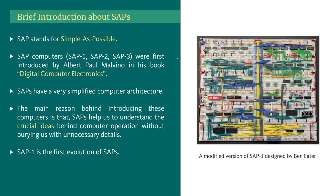Before we begin, we need a brief introduction about the SAPs. SAP basically stands for Simple As Possible, and these computers were introduced by Albert Paul Malvino in his book 'Digital Computer Electronics.' There are three types of SAPs: SAP-1, SAP-2, and SAP-3. The main reason behind introducing these computers is that they have a very simplified computer architecture but still follow the same fundamentals of modern computers.